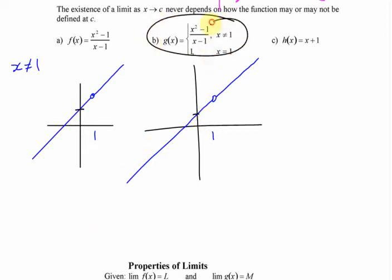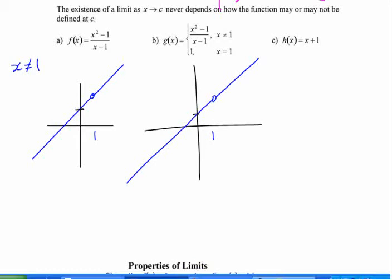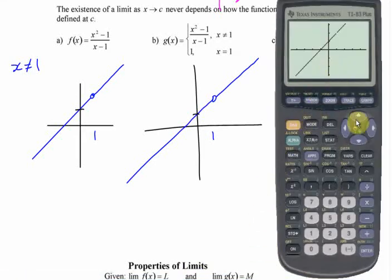This function is exactly the same, except it looks more complicated because it says this function applies everywhere except for 1, but where it's 1, this applies. Let's go back to the calculator. What does it look like that value should be? If I'm tracing here and I start to go to the right, what does it look like the value that that hole should be?